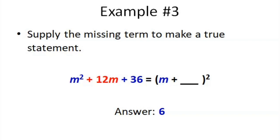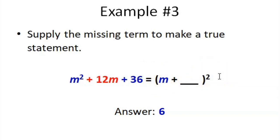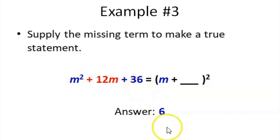Let's go to Example number 3, our last example: Supply the missing term to make a true statement. We have the trinomial: m squared plus 12m plus 36 equals (m + ___) squared. What value should we place in the blank to make this statement true? The answer is 6. Why? The square root of m squared is m, the square root of 36 is 6, and the product of m and 6 times 2 equals 12m, which matches the middle term.